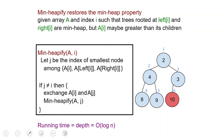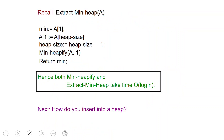The running time for min heapify is the depth of the heap, which is logarithmic in the size of the heap. To extract the minimum from a heap: fetch the root, move the last element to the root, decrease the heap size, then call min heapify. The running time is dominated by min heapify, so extracting the minimum element from a heap runs in O(log n) time.